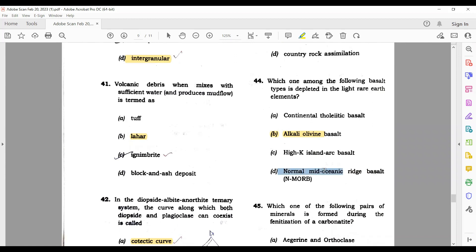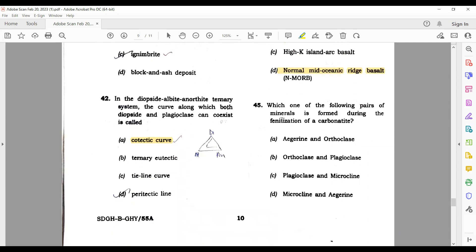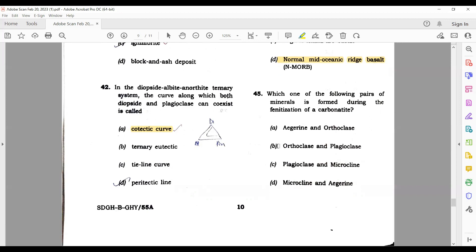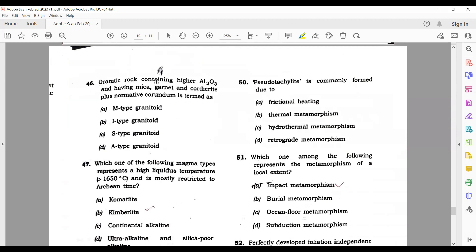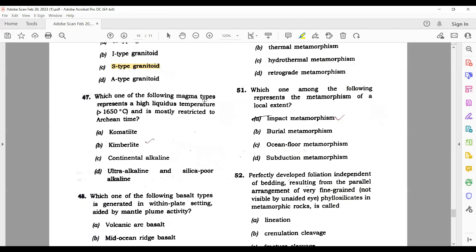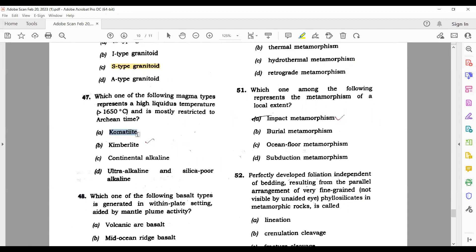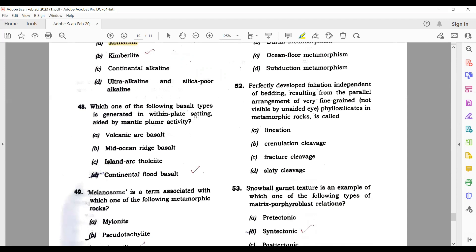In many dikes, phenocryst facies get concentrated toward the center of the dikes away from the wall due to flow segregation. Which one among the following basalt is depleted in LREE? It's simple - normal mid-oceanic ridge basalt. So D is your correct answer. Question number 45 - which one of the following pairs of mineral is formed during the fenitization of carbonatite? Options are aegirine and orthoclase, orthoclase and plagioclase, plagioclase and microcline, microcline and azurite. C and B cannot be your answer, but I am confused between A and D option. You guys can answer this in comments again.